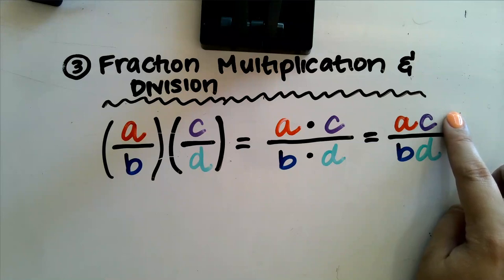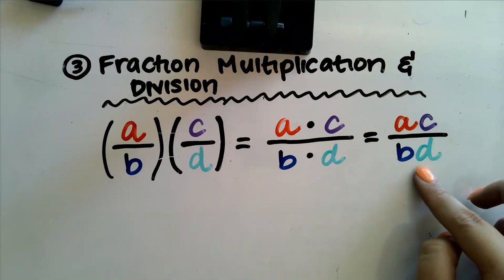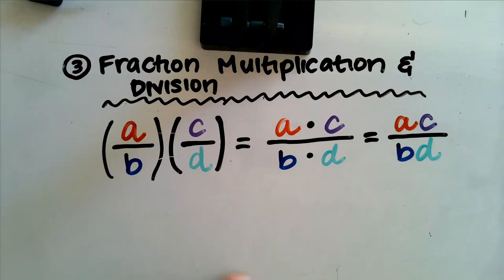A lot of times you're going to see variables or sometimes numbers written right next to each other, and your job is to multiply them. So we can write it as A times C over B times D. Go ahead and pause here. Please write this down and put this in your notebooks.